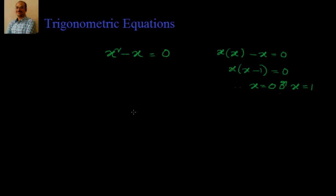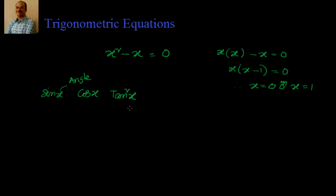Trigonometric equations means wherever you have x, instead of that you will have a trigonometric ratio or a trigonometric function. That means your x is replaced by either sin x, cot x, cos x, tan x, or tan²x, whatever it is. So instead of having x as the variable, you are having a trigonometric ratio of variable angle x. Here x is the angle, because we are applying trigonometric ratios to angles.